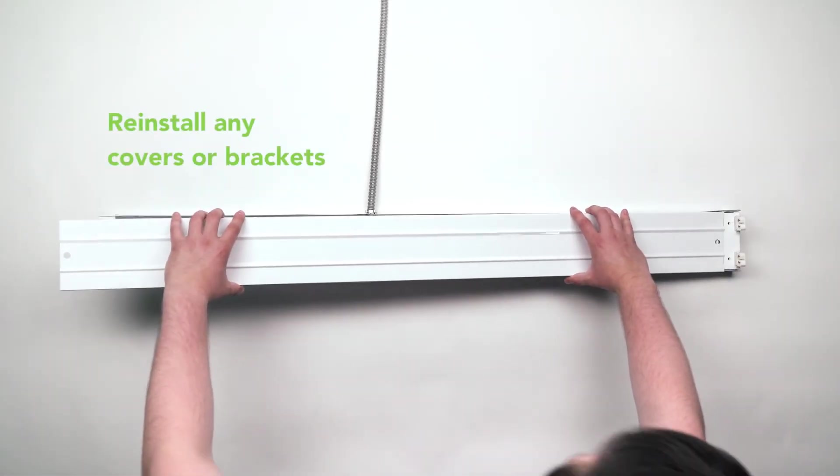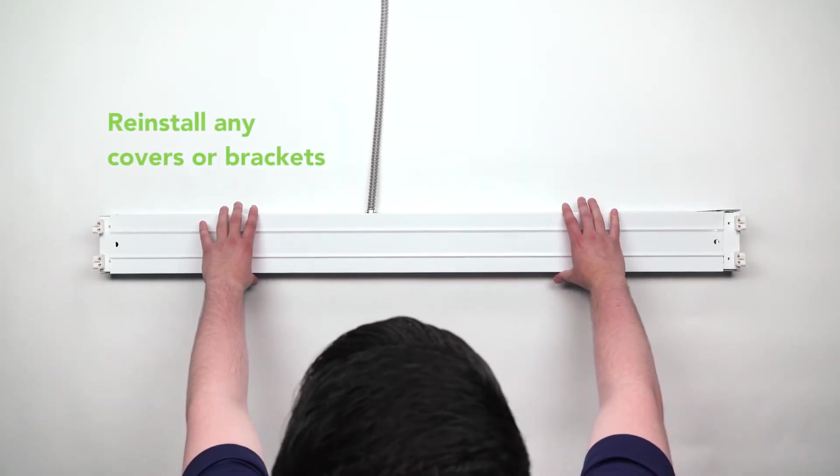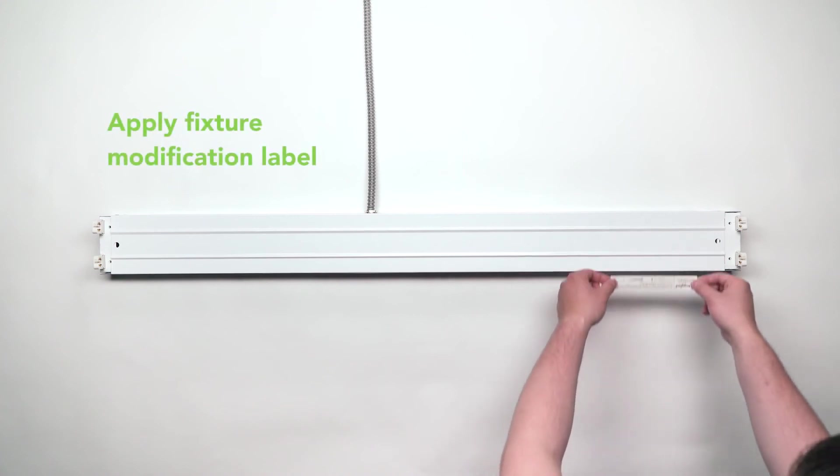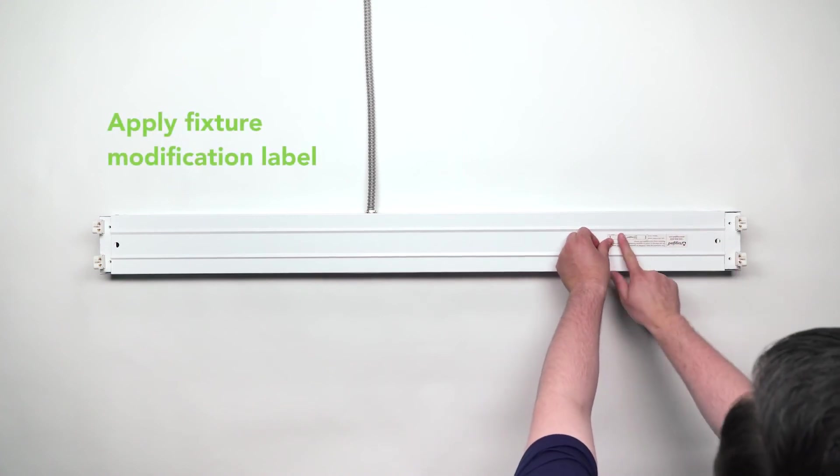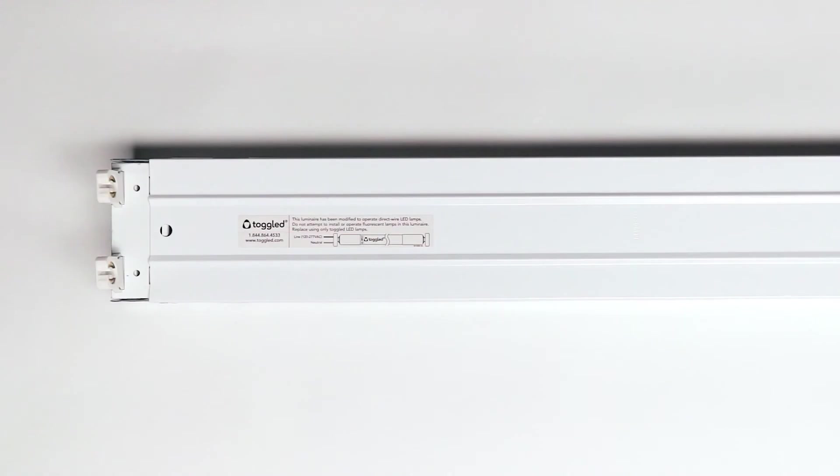Reinstall the ballast cover and any other covers or brackets. Apply the fixture modification label at the powered end of the fixture. This label informs anyone servicing the fixture in the future that it will no longer accept fluorescent lamps. It also indicates which direction to install your toggled lamps to receive power.